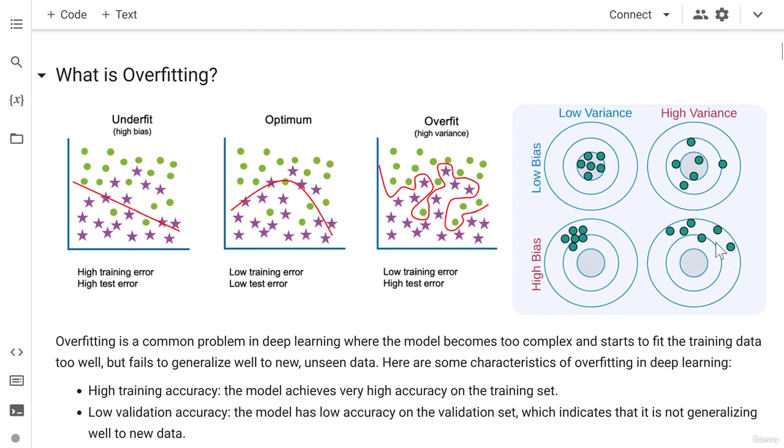When all these values are concentrated and around only the actual value, in that case it is known as low bias and low variance.